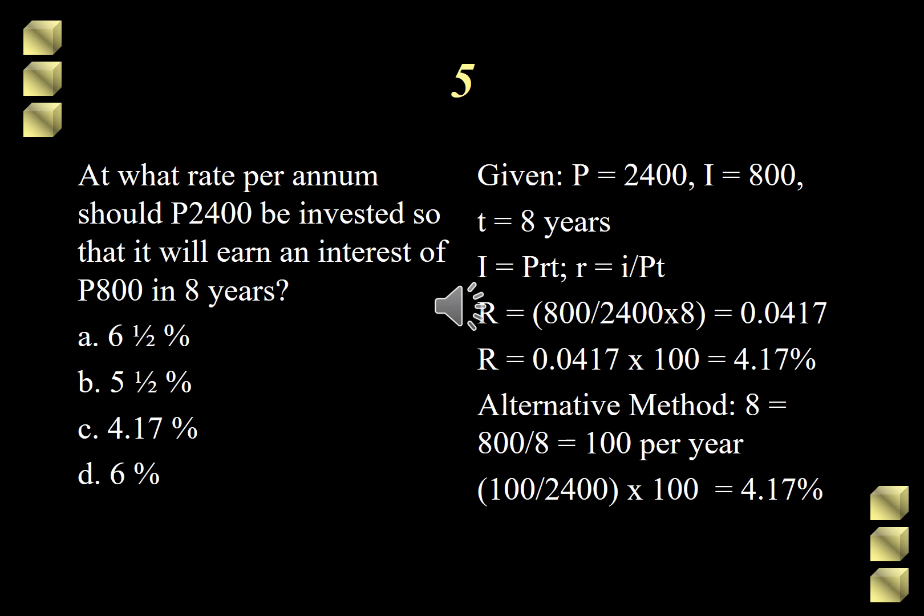I just need to fill in the values. Rate R equals I, which is 800, divided by the product of 2,400 and 8. That gives me 0.0417, and converting that into percentage, that is equal to 4.17%. Hence, we can now get the answer, and that is 4.17%, letter C.